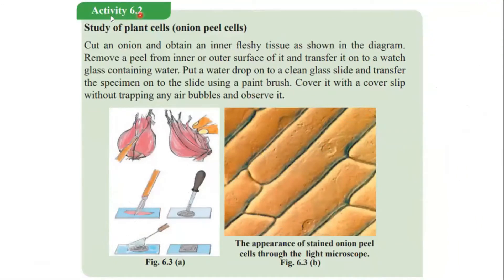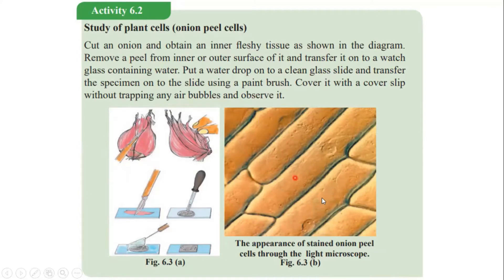Let's discuss activity number two in your textbook: study of plant cells. Cut an onion and obtain an inner fleshy tissue as shown in the diagram. Remove a peel from the inner or outer surface and transfer it onto a watch glass containing water. Put a water drop onto a clean glass slide and transfer the specimen using a paint brush. Cover it with a cover slip without trapping any air bubbles and observe it through the light microscope.